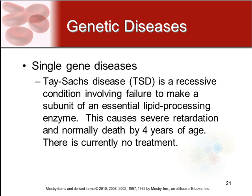Another example is Tay-Sachs disease, or TSD. This is a recessive condition involving the failure to make a subunit of an essential lipid-processing enzyme — one that helps break down fat molecules. This causes severe mental retardation because fat is necessary for life, and normally causes death by age four. Currently there is no treatment, as we do not know how to create a synthetic way to process lipids.